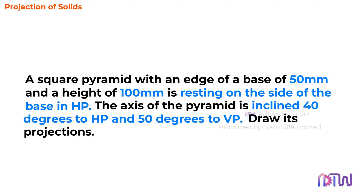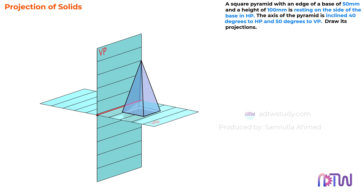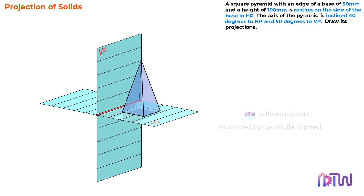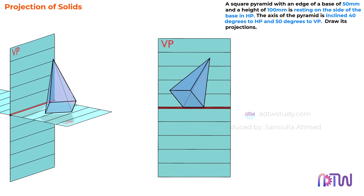Let's delve into the instructions with the help of a three-dimensional figure. The pyramid with a 50mm base and 100mm height is resting on the horizontal plane, HP. It's crucial to note that the pyramid is positioned this way because the instruction mentions resting on the side of the base in HP. Since the pyramid is meant to be inclined so that it rests on one of the sides of the base, we're maintaining this orientation. If the instruction had indicated resting on one of its corners, the pyramid would have been positioned differently. The pyramid's axis is inclined 40 degrees with HP and 50 degrees with VP, and here's how it appears in the front view and the top view.